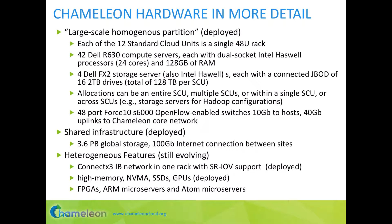Standard cloud units, or SCUs, form a large homogeneous partition. Each SCU has 42 compute nodes, and each has two Intel Haswell processors with 12 cores, for a total of 24 cores per node. There are four storage nodes with 16 2TB disks per node, for a total of 128TB per rack. At over 12 racks, this totals 1.5 petabytes of storage. Allocations can be an entire SCU, multiple SCUs, within a single SCU, or even across SCUs. For example, we could make a Hadoop cluster out of storage servers with high IO bandwidth.